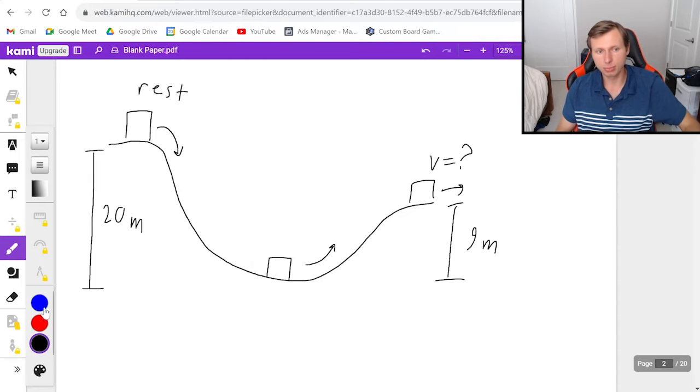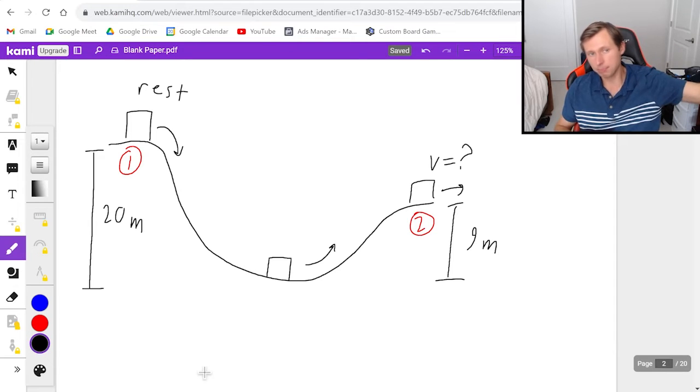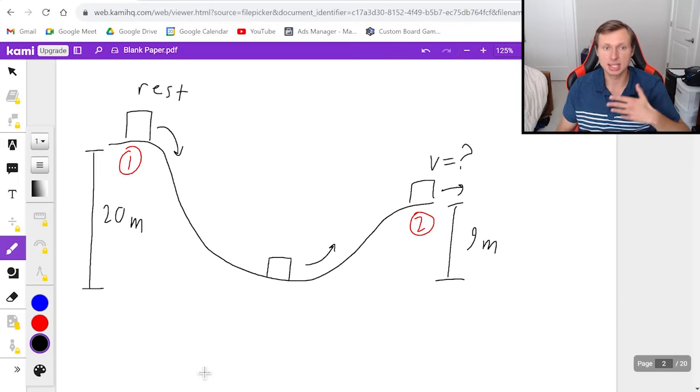And unfortunately for us I am not giving you the mass. So then how are we going to solve this problem? First I got to pick my two points. My first point is obviously the beginning at point 1 and point 2 is at the end when it goes back up the 9 meters. So even though I would say that at the bottom, at the 20 meters below the starting point, that is going to be the fastest position when it has the highest kinetic energy because all the gravitational potential energy got converted to kinetic energy, I don't care about this middle position at all. I can ignore it.